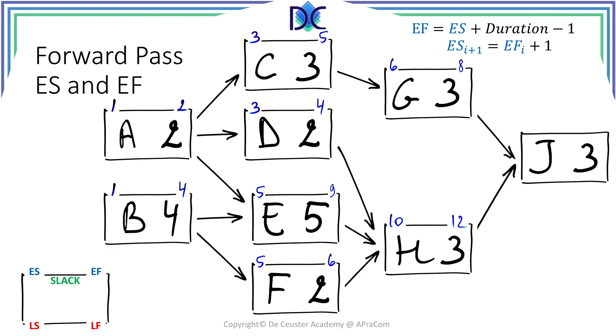And finally we can look at J. We have the predecessors G and H. So J can start at 13th of April. 13 plus 3 minus 1 is 15. So the project will end on the 15th of April.